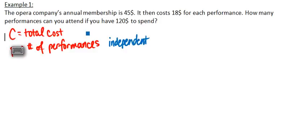The one that can change and depends on the number of performances would be the total cost. If we look at these two, we can see that the total cost will be $18 for each performance, plus an annual membership of $45. So this is our algebraic expression.